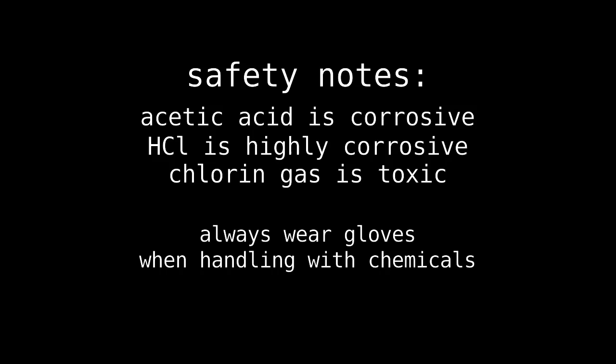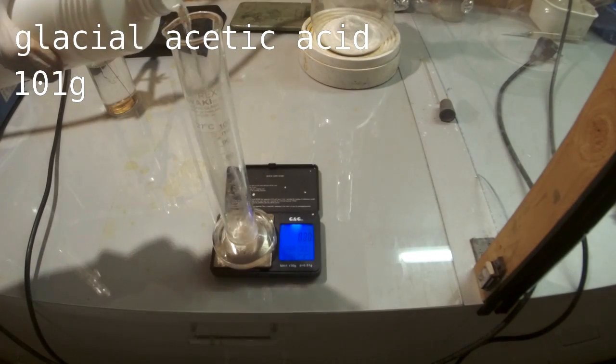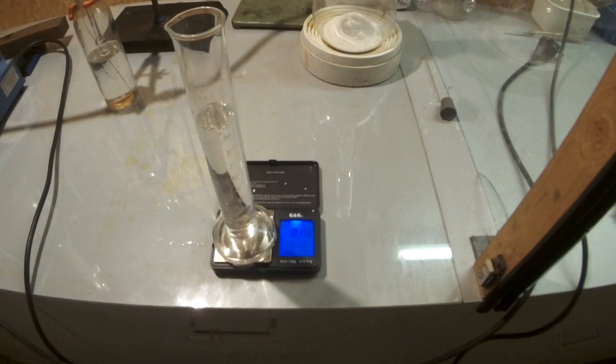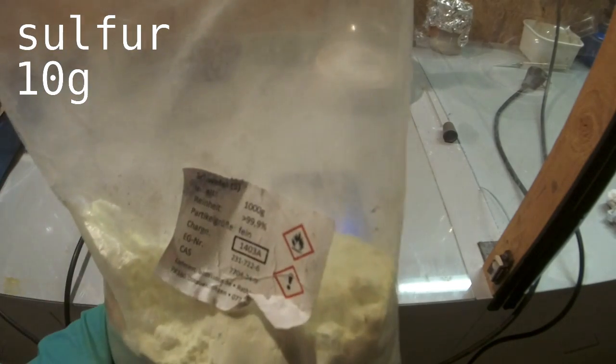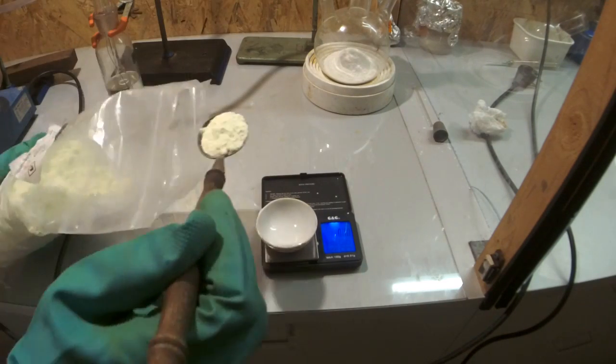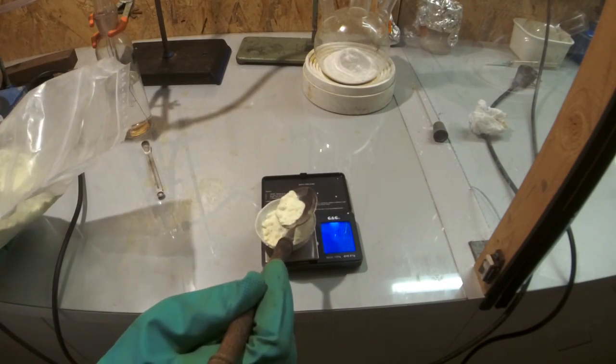For this purpose, I weighed out 101 grams glacial acetic acid and 10 grams sulfur as a catalyst. For the chlorine gas generator, I used TCCA, which was obtained from pool tablets.